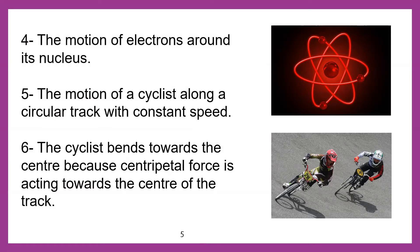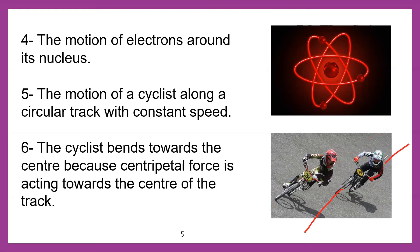Number six: the cyclist bends towards the center because the centripetal force is acting towards the center of the track. If you look at the diagram, we can show the track of the cyclist, but the centripetal force is acting toward the center. So the force on the first cyclist is acting toward the center, and the same way for the second one is acting toward the center.